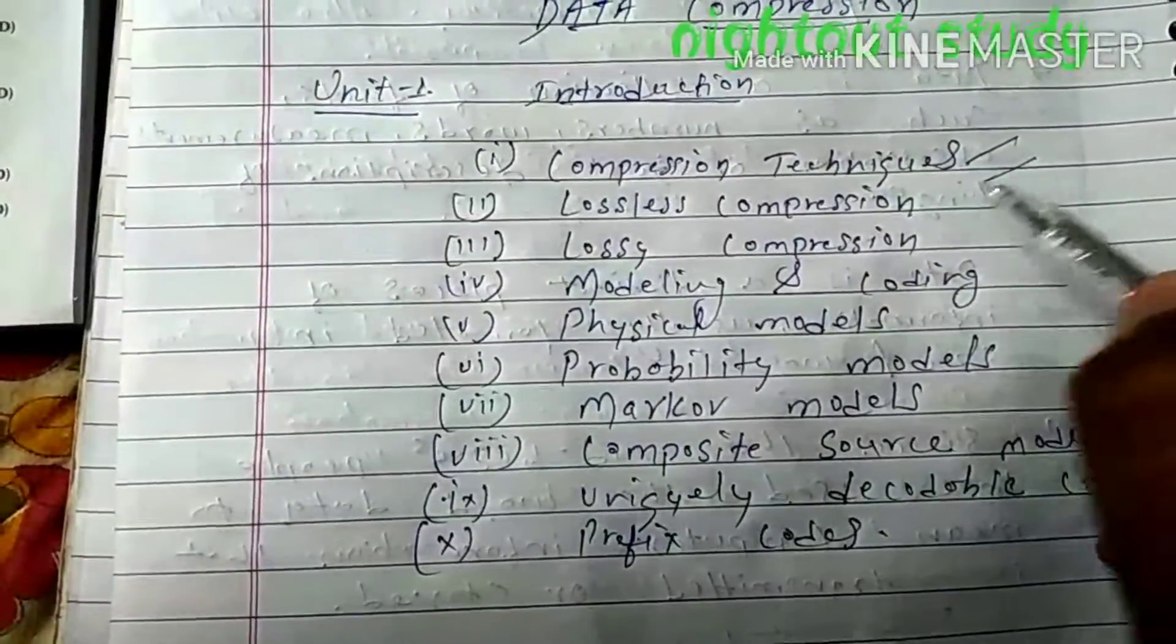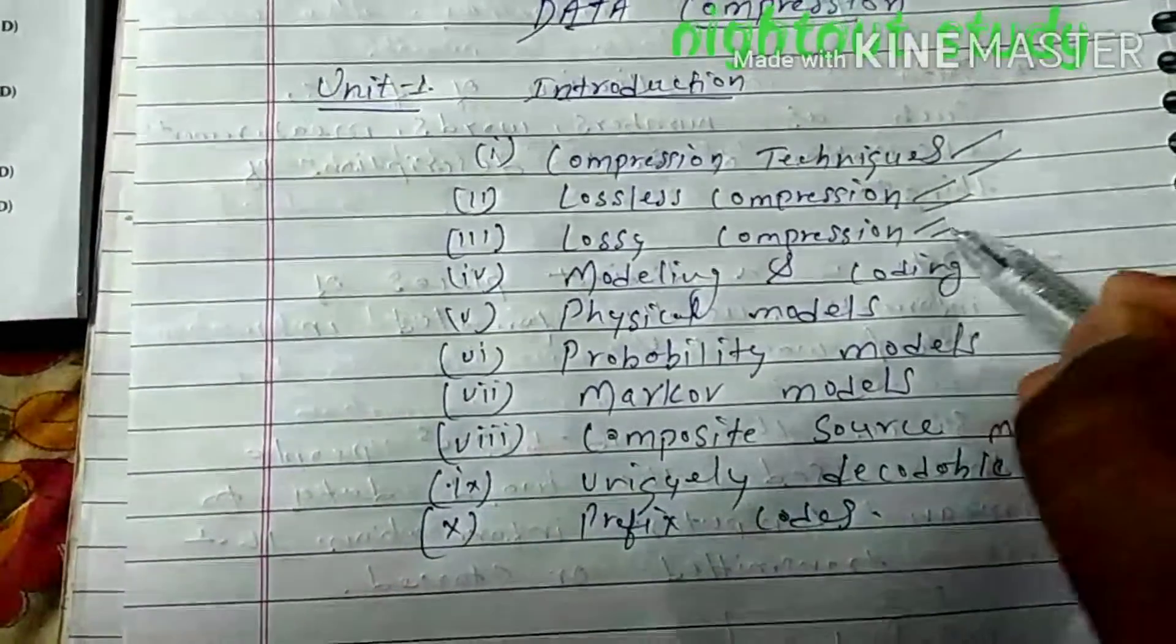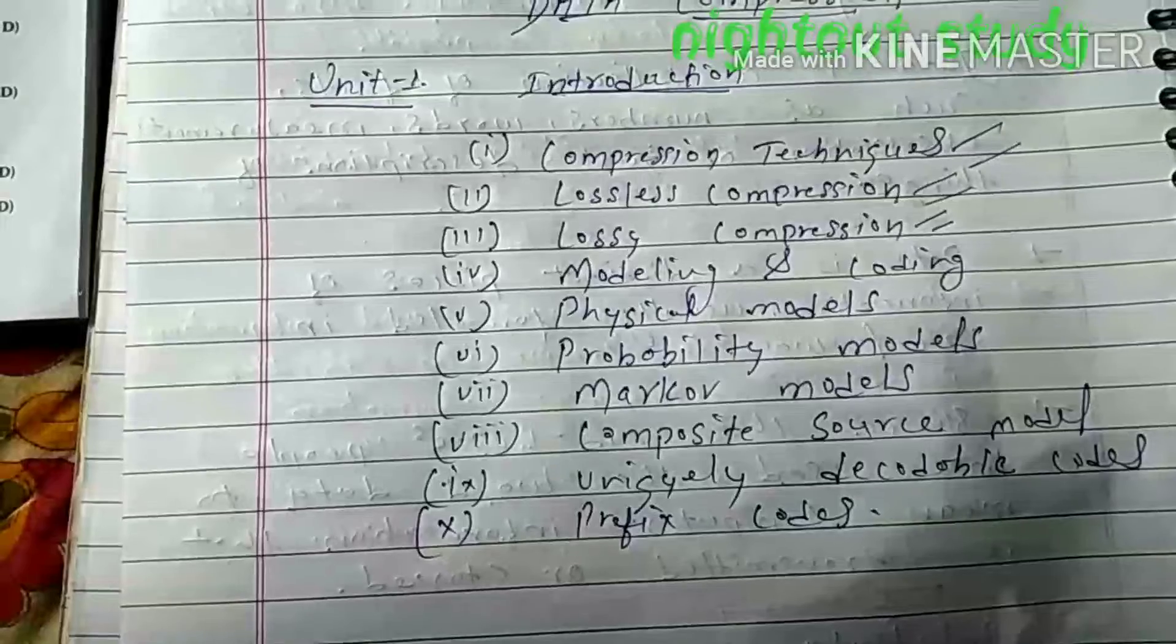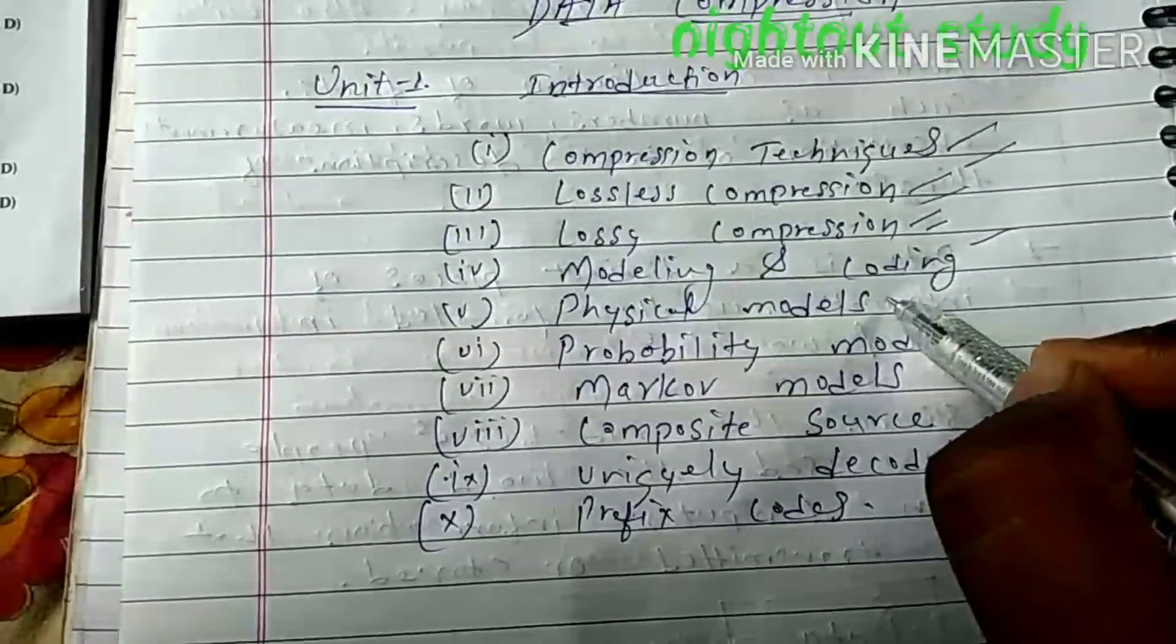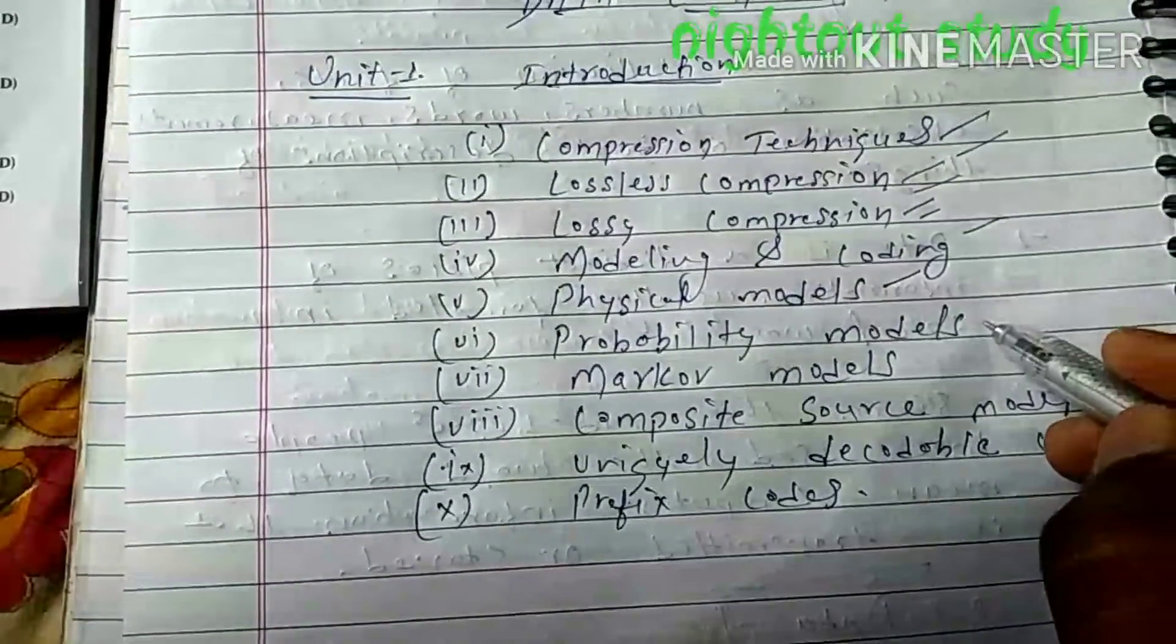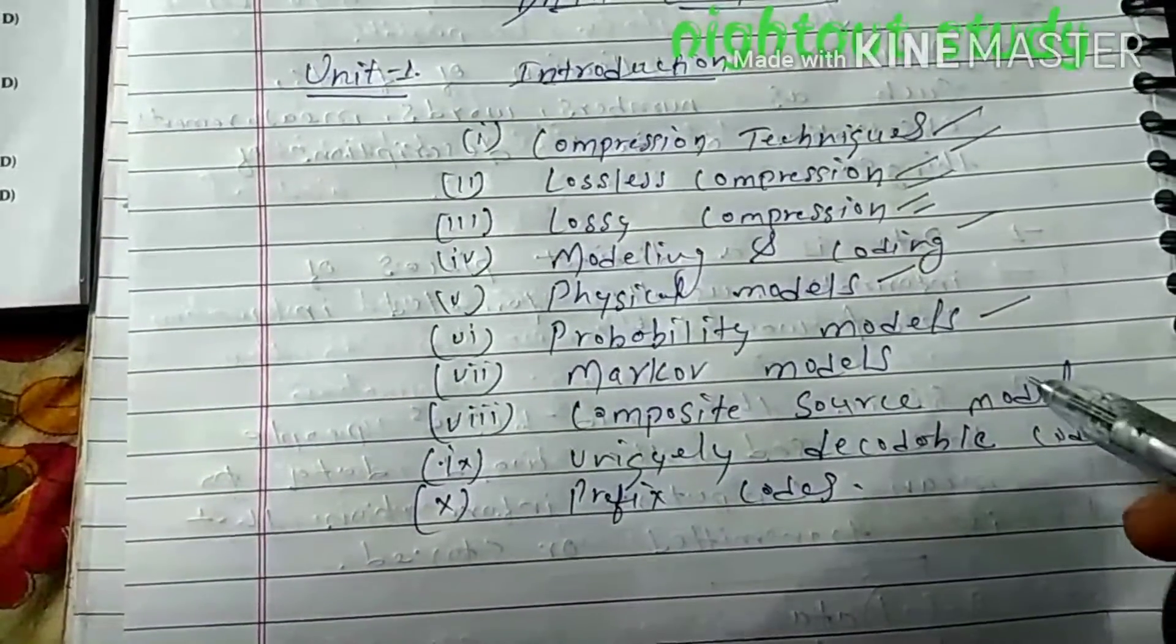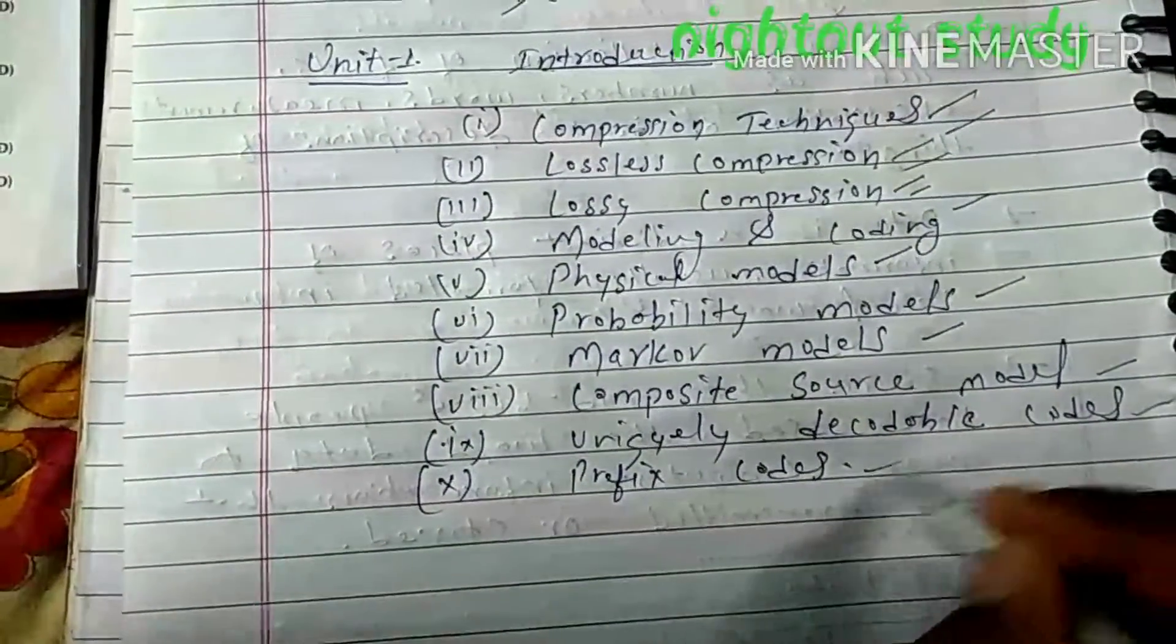The second one is lossless compression. Further we will see lossy compression, then modeling and coding, then physical model, probability models, Markov models, composite source model, uniquely decodable codes, and prefix codes.